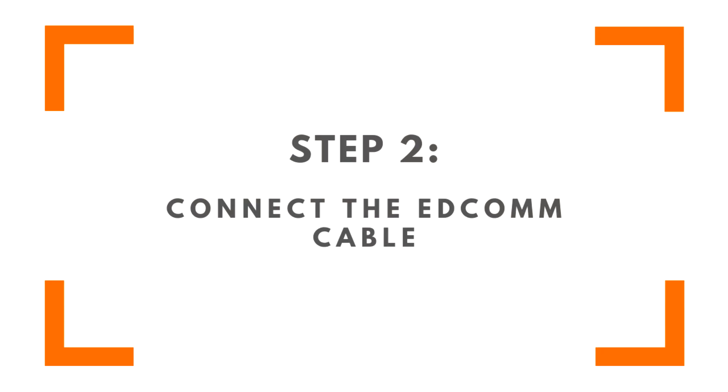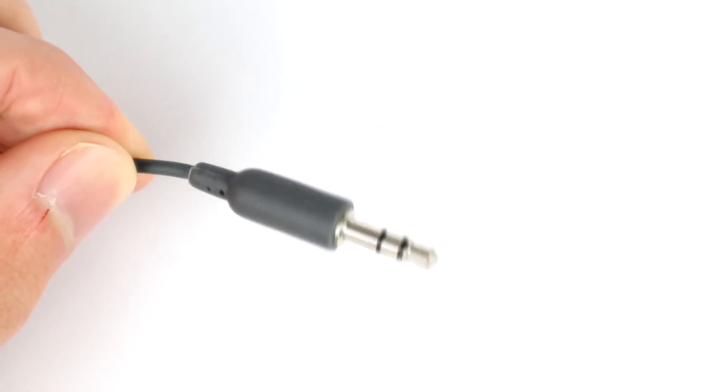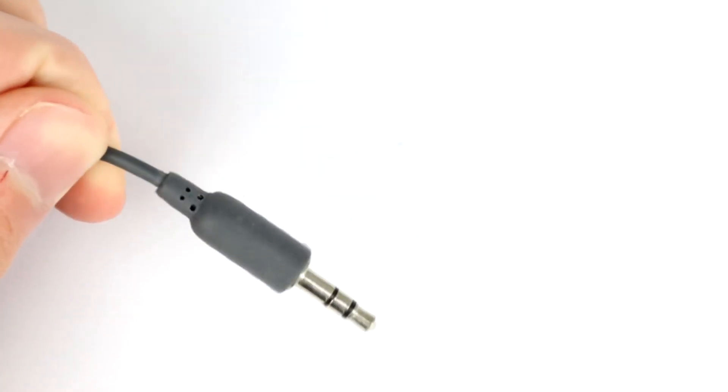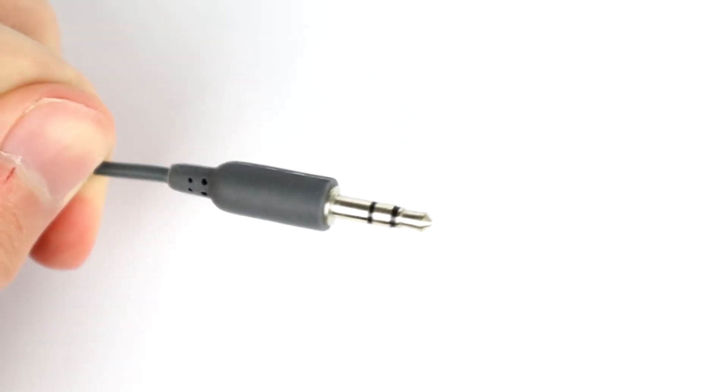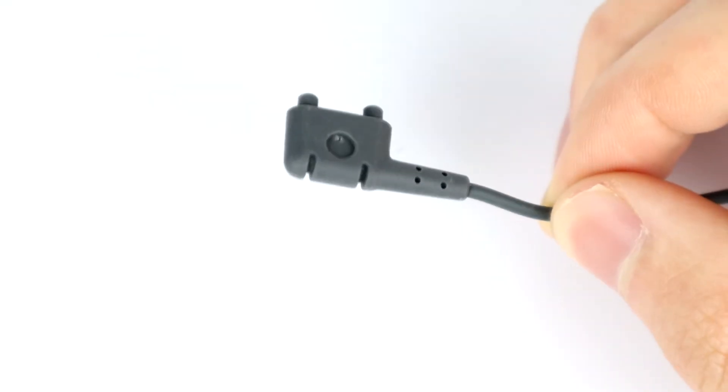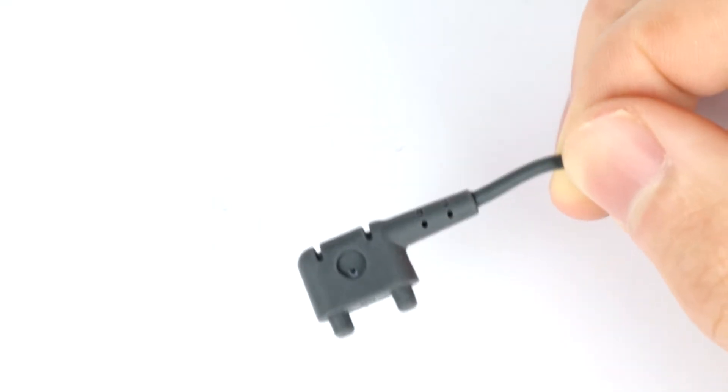The second thing to do is connect Edison and your programming device together using the EdCom cable. The EdCom cable is really interesting, so it's worth taking a minute to see what it actually does. The cable has two ends: the end with the audio jack connector, which plugs into your computer or tablet, and the end that connects to your Edison robot. When you download a program from your computer to your Edison robot, it's sent as an audio file. That's the buzzing, crunchy noise you hear while the program is being downloaded.